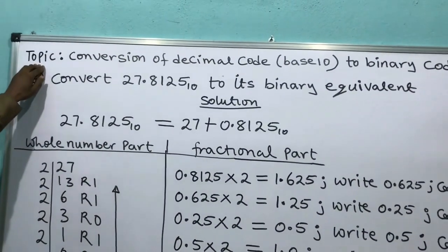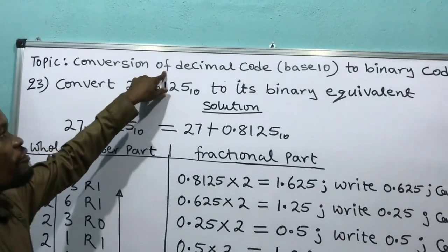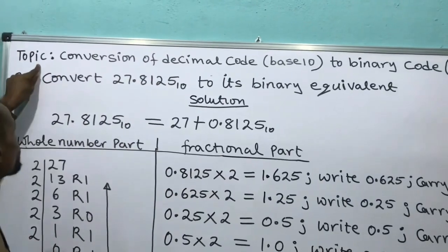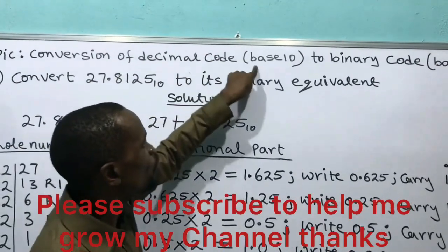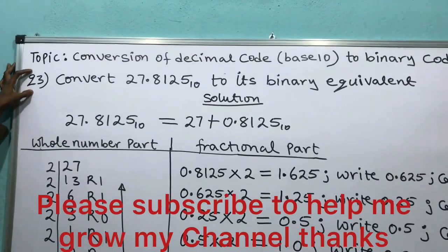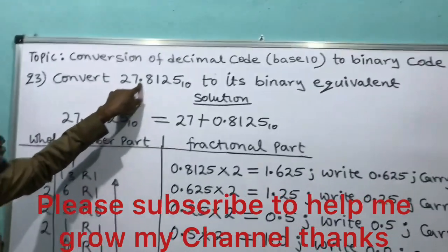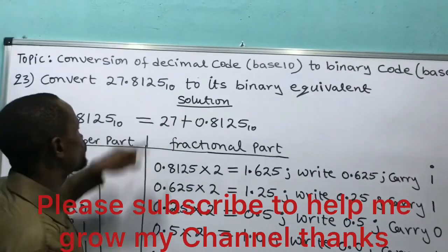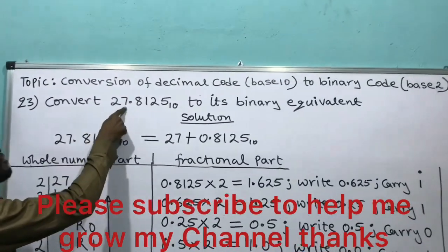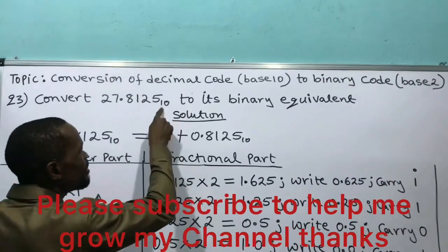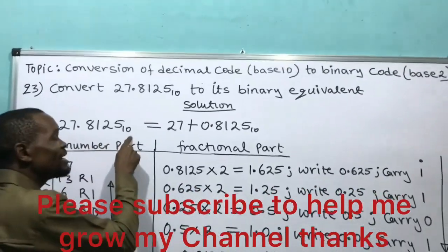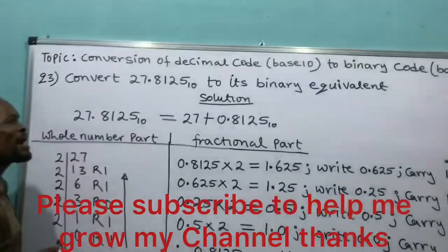We are still in the same topic: Conversion of Decimal Code, which is base 10, to Binary Code, which is base 2. Question number 3: Convert 27.8125 base 10 to its binary equivalent. Solution. We remember that 27.8125 base 10 has two parts — the whole number part 27 and the fractional part 0.8125.